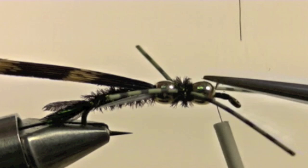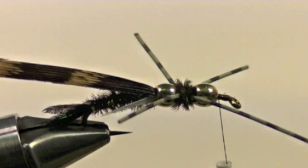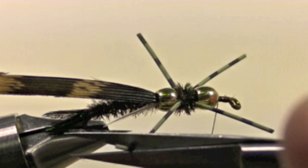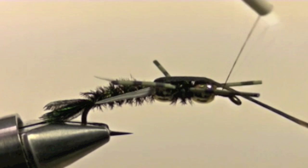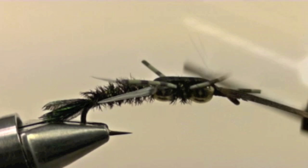Now we want to make sure our rubber legs are the length that we want them. And then pull over the wing casing and secure this down. Once the wing casing is secure, clip off the excess.